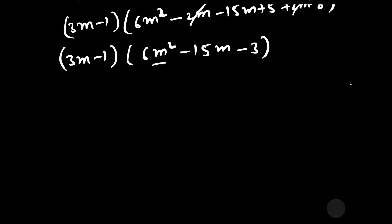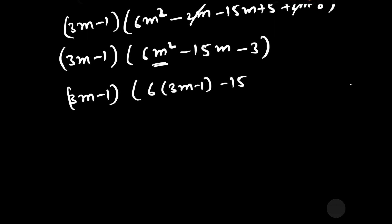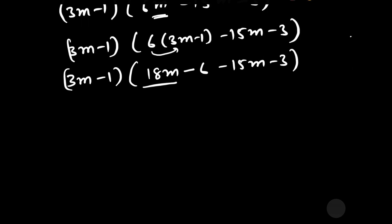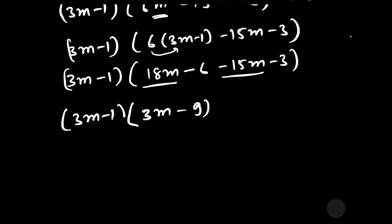Putting m² = 3m − 1 again, we write 6(3m − 1) − 15m − 3, which gives 18m − 6 − 15m − 3. Adding 18m and −15m gives 3m, and −6 − 3 = −9. So this becomes (3m − 1)(3m − 9).